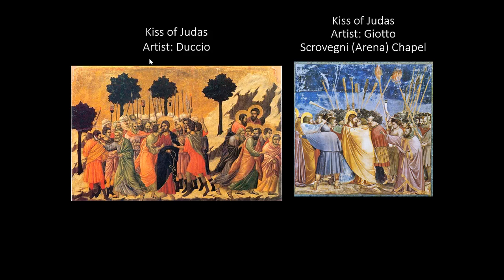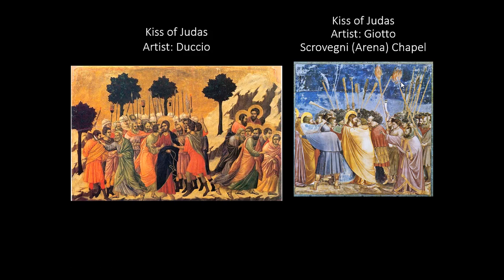Duccio does kind of take a step forward by including trees, but that's pretty much it. If you look over at Giotto, you see this blue. The blue is really cutting edge because what Giotto is doing is actually bringing nature — bringing the natural world back into the subject matter of art. This hasn't been seen for hundreds and hundreds of years. The blue sky and trees in the background represent a return to the natural world, which will presage what happens in the Renaissance, where the natural world and man's experiences within it become a huge focus.